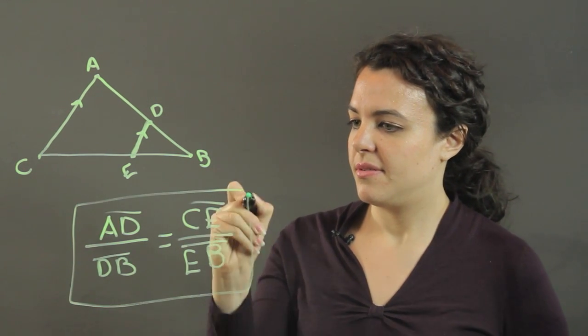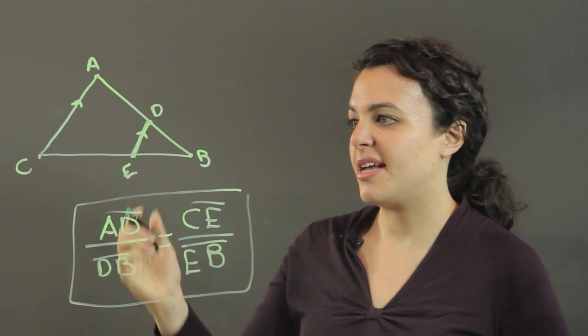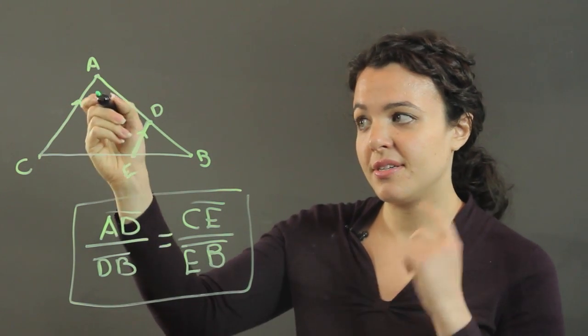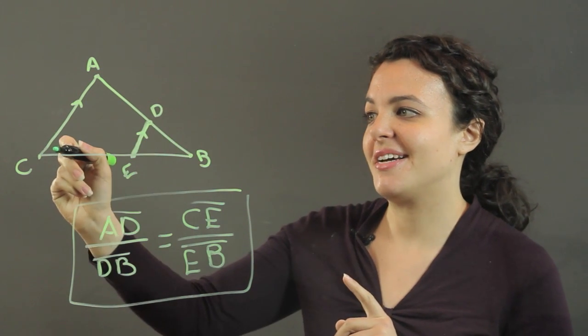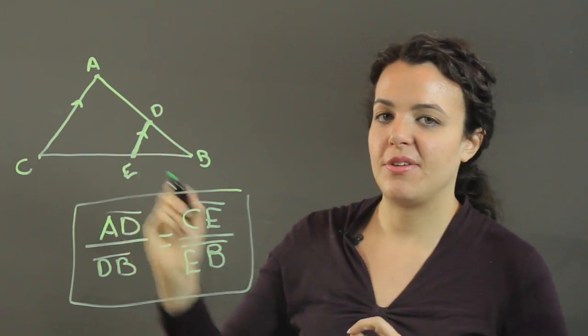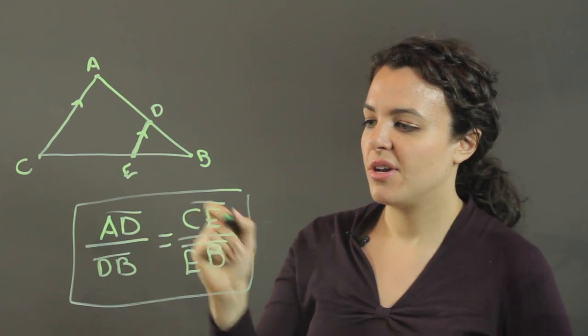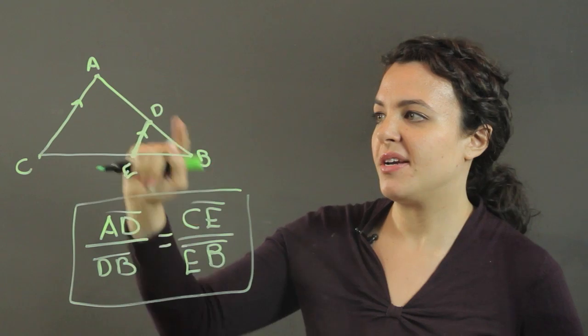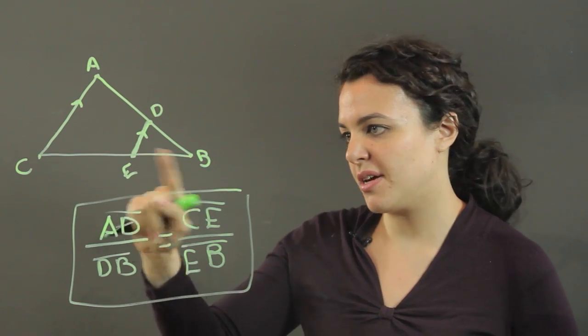There you have it. You just need to make sure that that line is parallel to one of the sides and intersects the other two. And you'll get this nice proportion that will help you find missing segment length values.